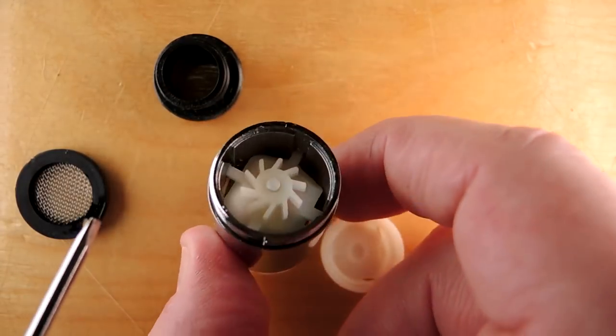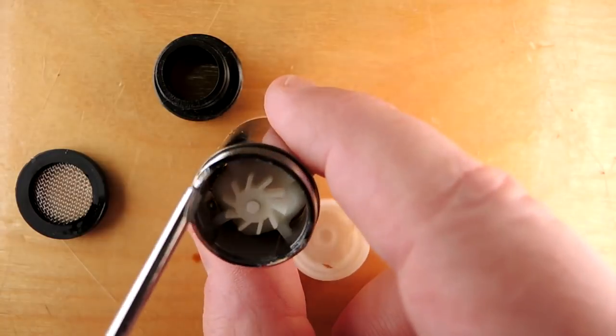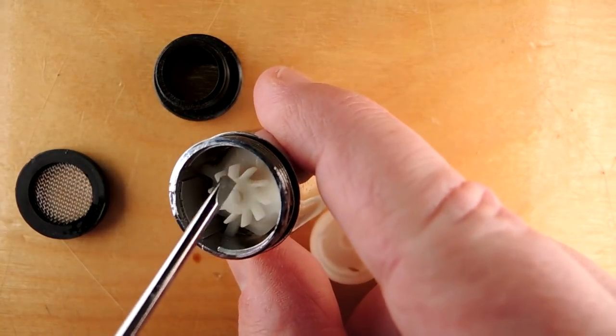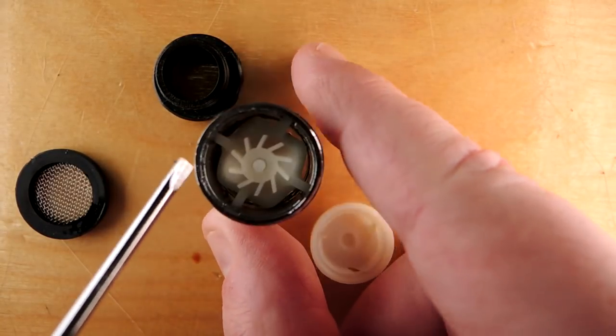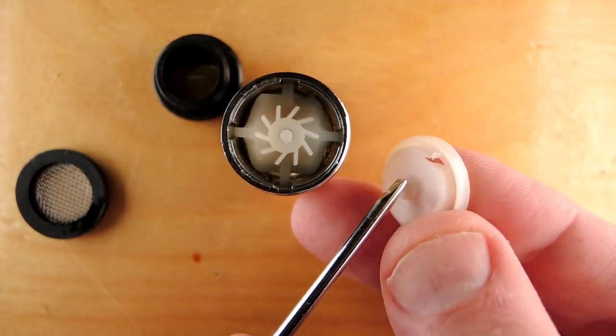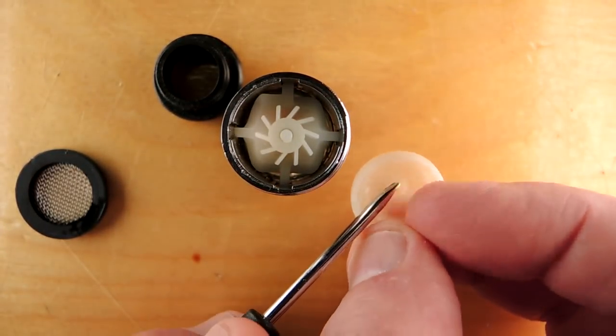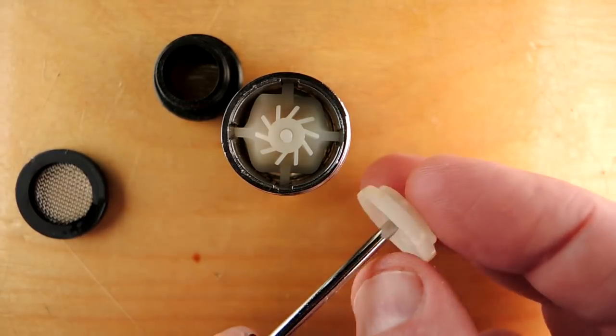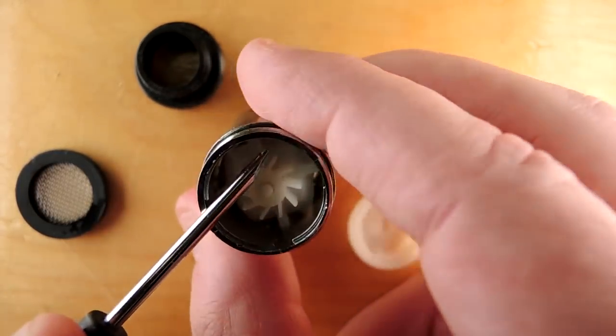So here we have it partially disassembled and no surprise. We can see that this little fin device, of course when the water forces against it, it turns it and there's going to be a little generator inside there. Kind of a clever cap here, you can see it's used to take the water flow from the top here and it creates three streams which of course push against these fins.